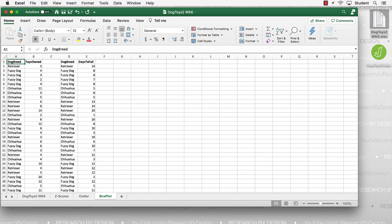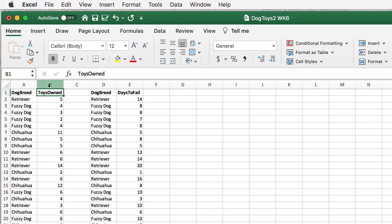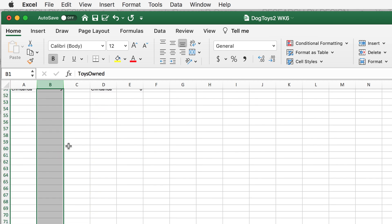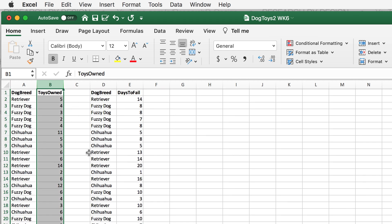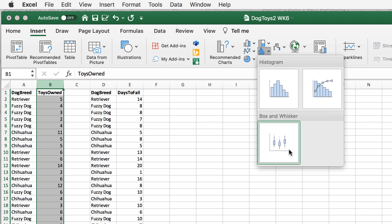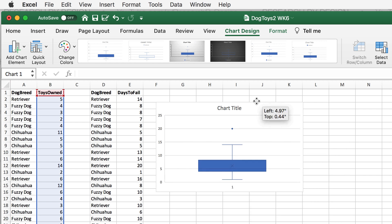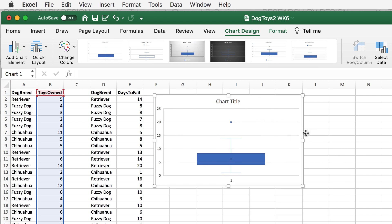You see both of our scale variables, the number of toys owned and the days to fail. We're going to focus just on the variable toys owned for this first example. Select column B. You don't need to select all of the data points individually, just to highlight the entire column. And then from the Insert tab, find the statistical charts. It has the histograms in this option as well. And then from this option, choose the box and whisker plot. This creates our box plot, which we can resize, or we could move.